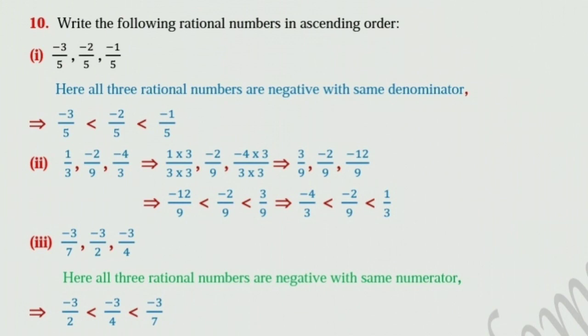Third one: minus 3 upon 7, minus 3 upon 2, and minus 3 upon 4. All three rational numbers are negative with the same numerators. Therefore, minus 3 upon 2 is less than minus 3 upon 4, less than minus 3 upon 7.